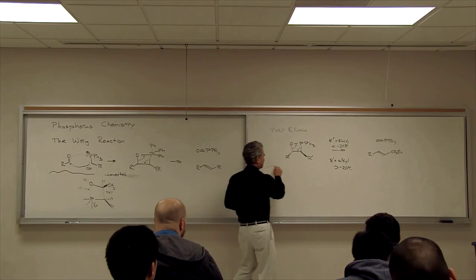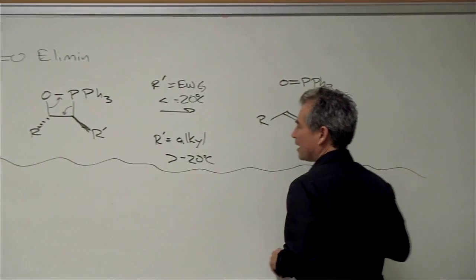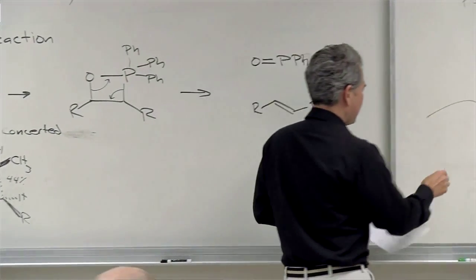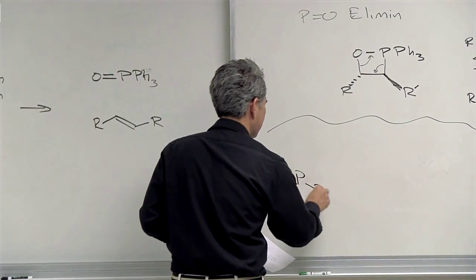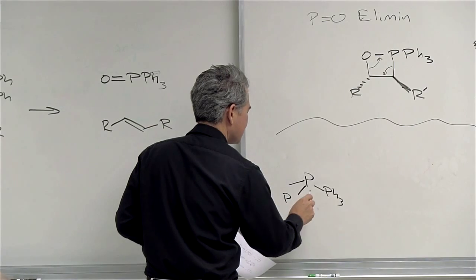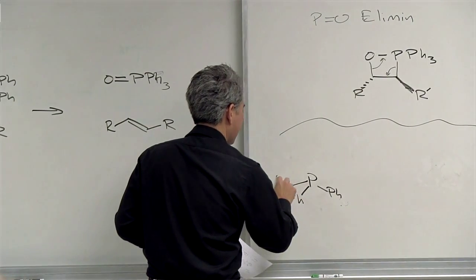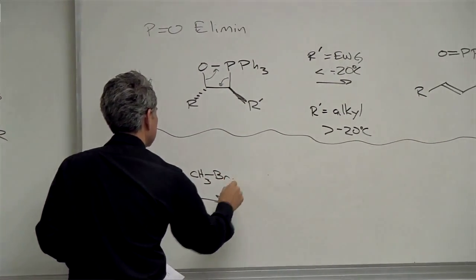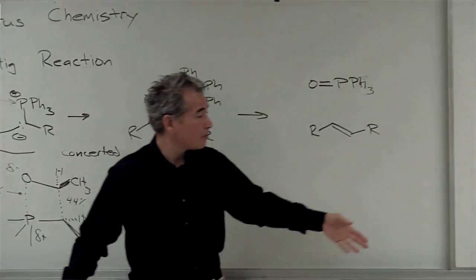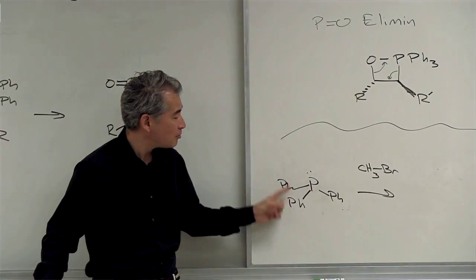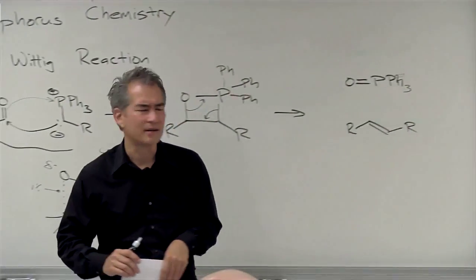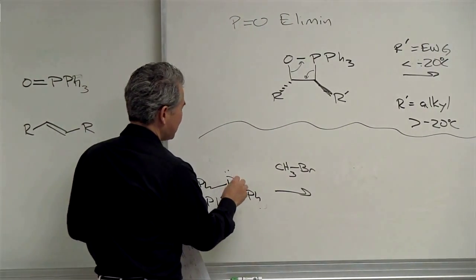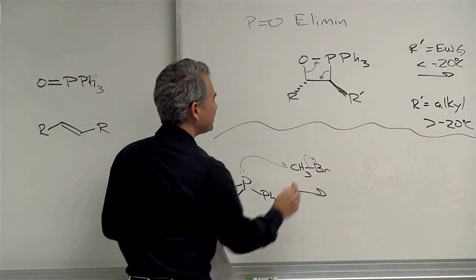The only remaining key question is how do you get these ylids — how do you end up with a C- next to P+? You make ylids by doing SN2 chemistry, which is usually one of the biggest limitations to the Wittig reaction. You have to have good substrates for SN2. You need aryl groups on your phosphine — if you have alkyl groups, you won't know where to deprotonate. You really need groups that cannot be deprotonated, and phenyl is the most common one.